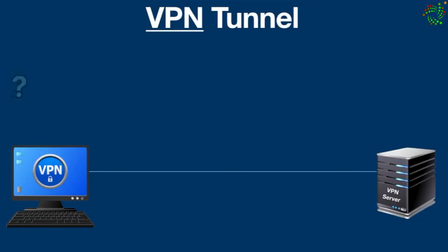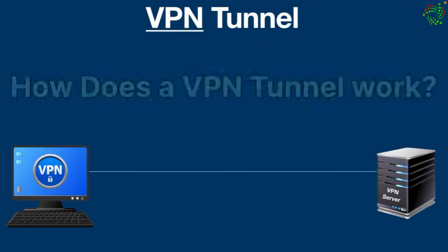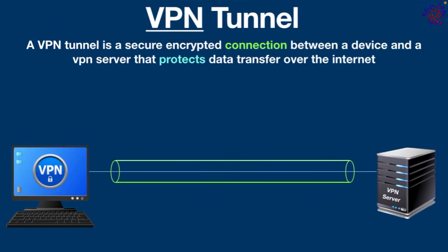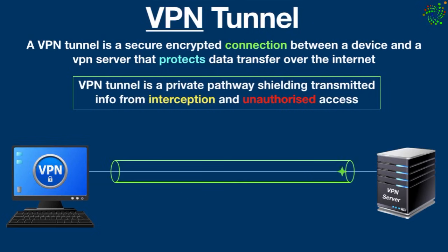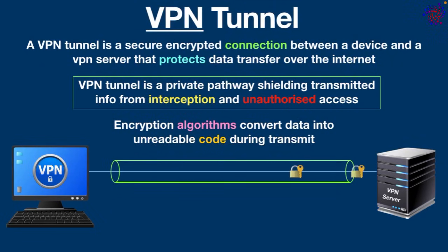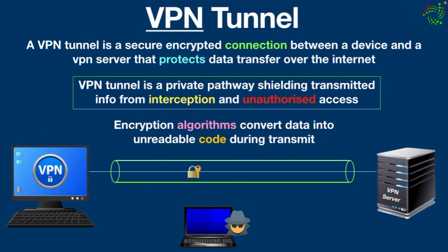How does a VPN tunnel work? A VPN tunnel is a secure encrypted connection between a device and a VPN server that protects data transfer over the internet. In simple words, a VPN tunnel is a private pathway shielding transmitted information from interception and unauthorized access. Encryption algorithms convert data into unreadable code during transit, ensuring that even if data is intercepted it remains inaccessible and secure.